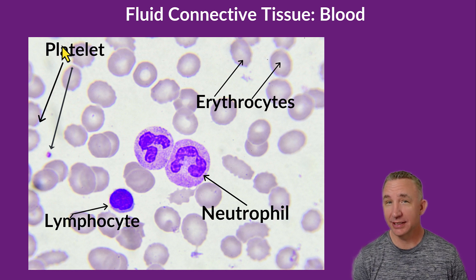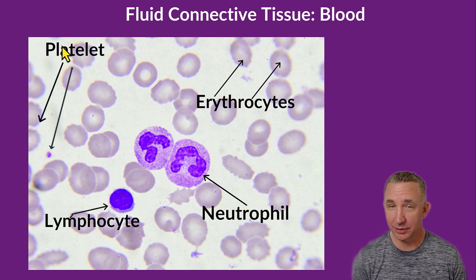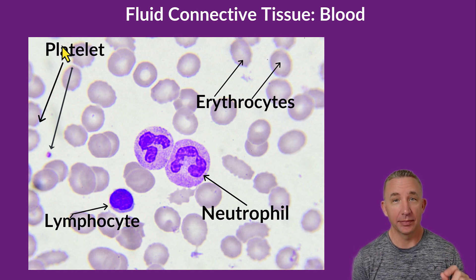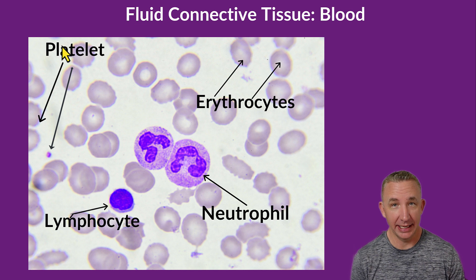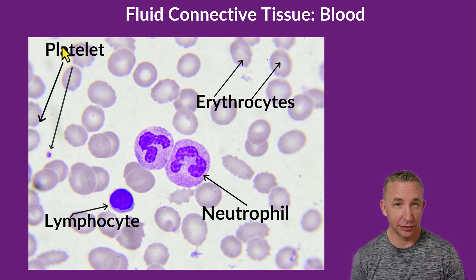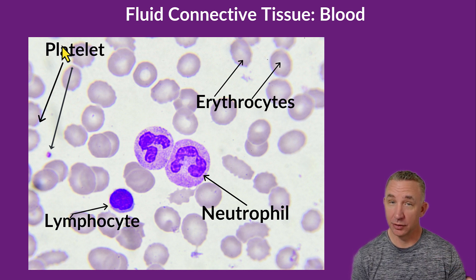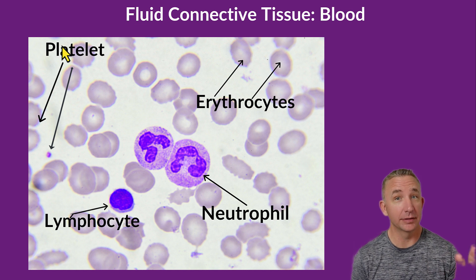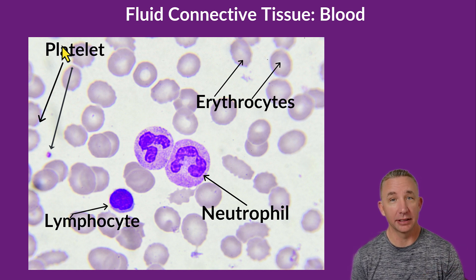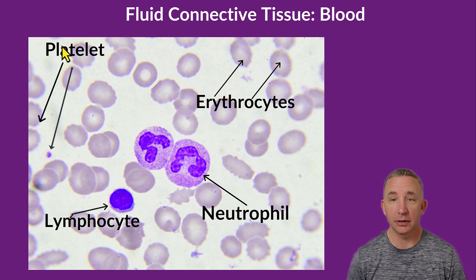Fluid connective tissue. This is histology of a blood smear. Remember, this is a connective tissue. There are three types of connective tissue: connective tissue proper, which includes loose and dense; fluid, which is our blood and lymph; and then supporting connective tissue — cartilage and bone.